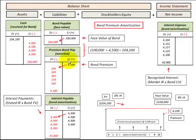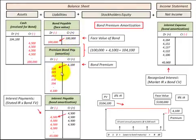This premium — or valuation account to bonds payable — becomes a balancing account between the cash amount received and the bonds payable amount. It also becomes a balancing account for the interest payable and the interest expense on that bond.